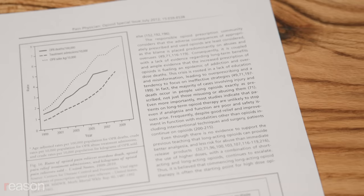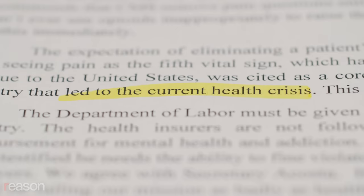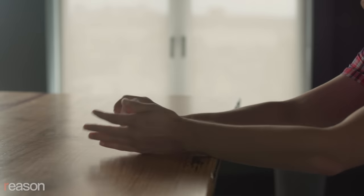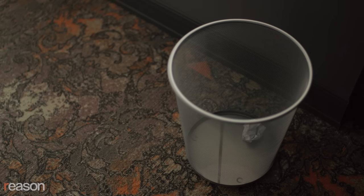It demonstrates absolutely nothing. By using a chart like this as evidence that the increase in opioid prescriptions caused the overdose crisis, government officials committed the most rudimentary statistical error of all, which is to assume that correlation proves causation.